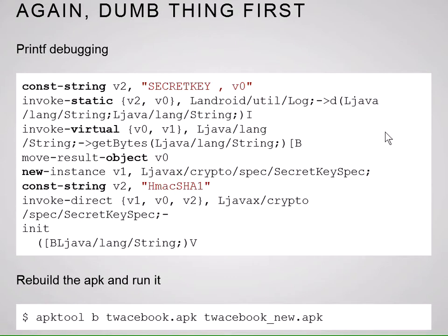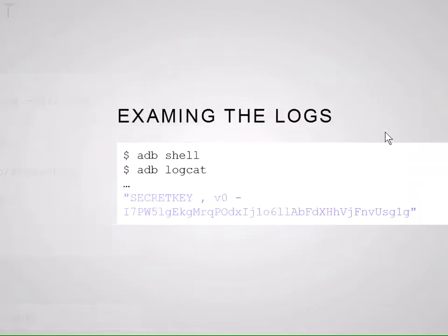Do the dumb thing first — we turn to the favorite tool of every freshman computer scientist: printf debugging. One of the cool things about Smali is that you can manipulate the app, put in new instructions, rebuild it, and it works completely — you don't have to worry about offsets. We just throw in a couple of strings: put a constant string 'secret key' into variable v2 and v0, then call the Android log function with that key passed in. Then looking at the log after rebuilding it — boom, we got our secret key.